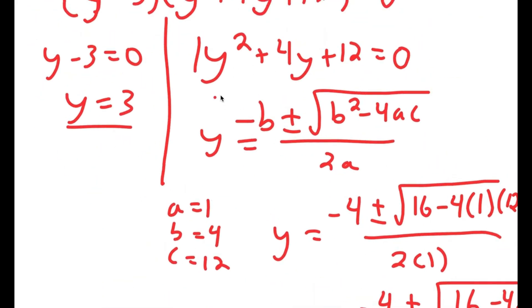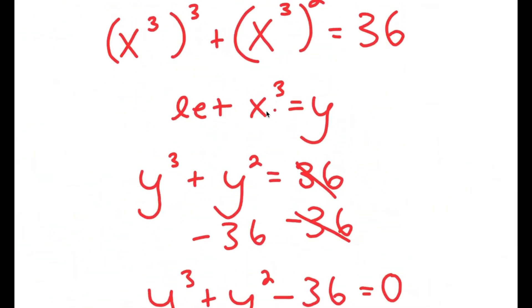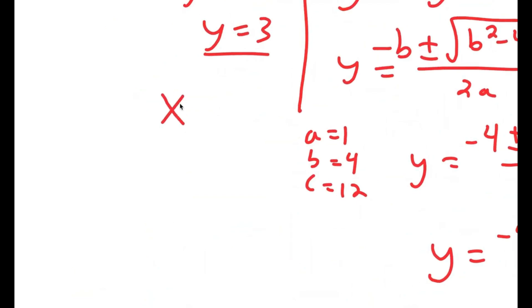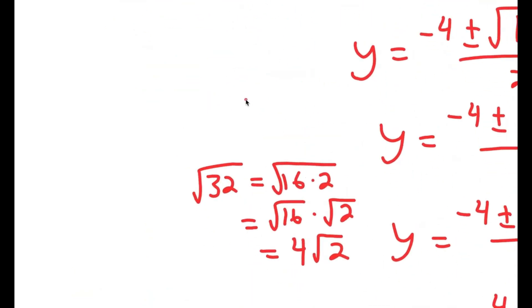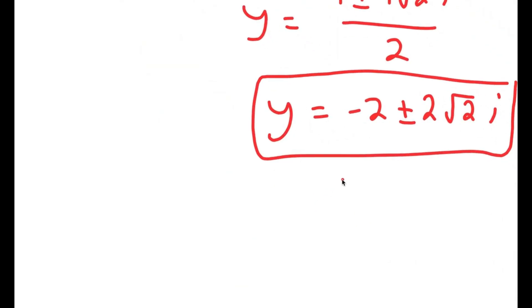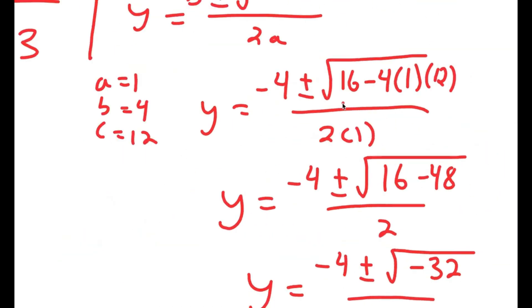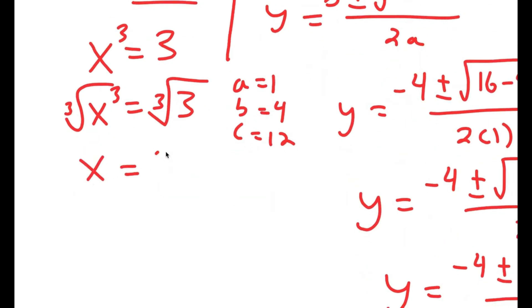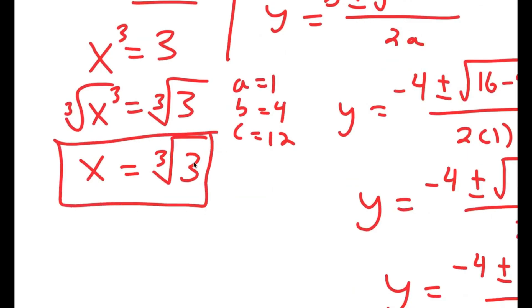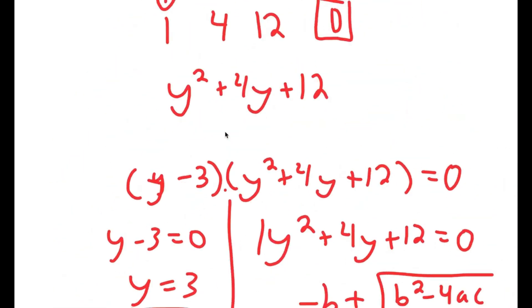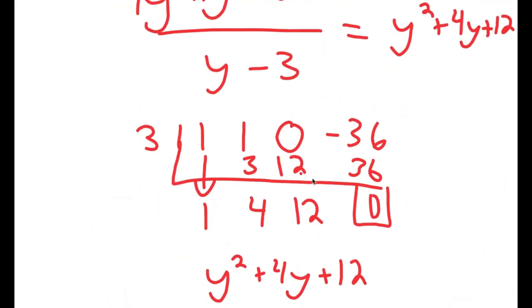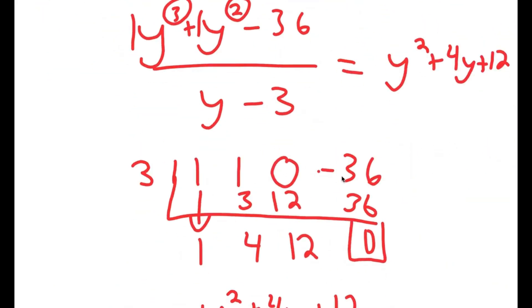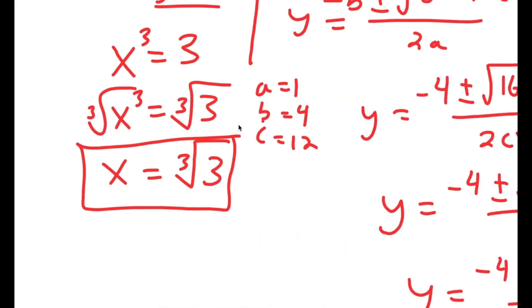So I have three solutions for y, however we aren't done yet because remember I let x to the power of 3 equal to y. So x to the power of 3 equals 3, and x to the power of 3 equals a complex number, which we can't use. So the only solution I can use is y equals 3. Taking the cube root on both sides, the cube root of x cubed is x, so x equals the cube root of 3. This is my solution. Remember, when solving problems like these, you always have to find one solution first and use that to find the remaining solutions.